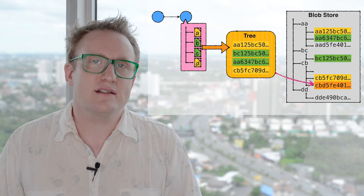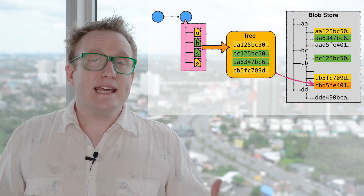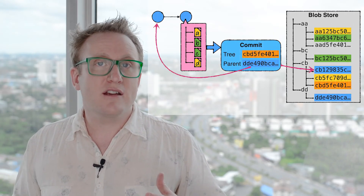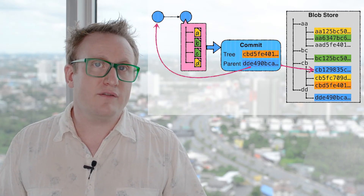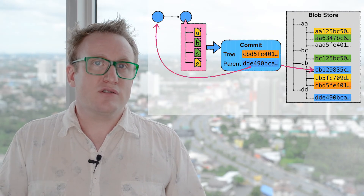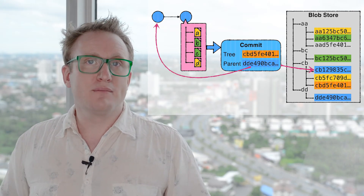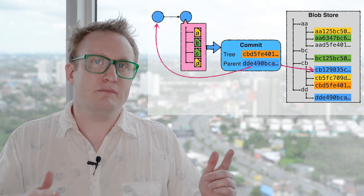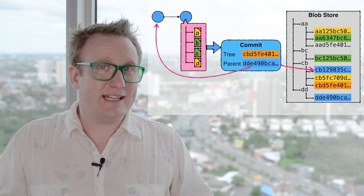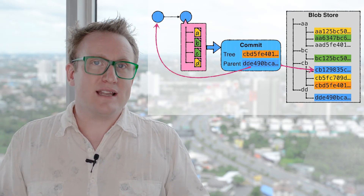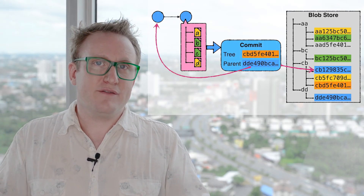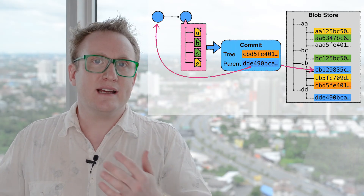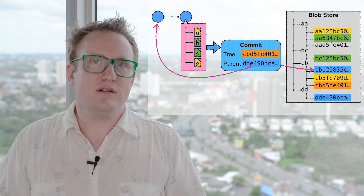The tree isn't everything in a commit though — a commit also has a reference to its parent. Git then creates a new simple text file that represents the commit itself. It has a reference to the tree, which is a key from the blob store, and a reference to its parent commit, which is also a key in the blob store. It wraps that up in a file, finds the hash, uses that as the key, compresses it — that's the value — and puts it in the blob store.